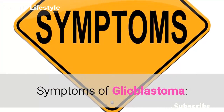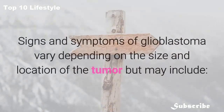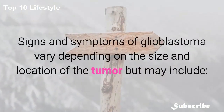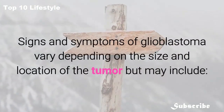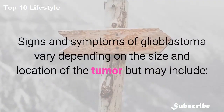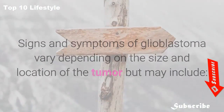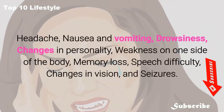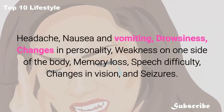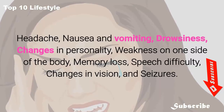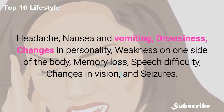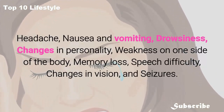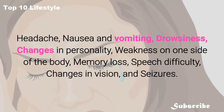Signs and symptoms of glioblastoma vary depending on the size and location of the tumor, but may include headache, nausea and vomiting, drowsiness, changes in personality, weakness on one side of the body, memory loss, speech difficulty, changes in vision, and seizures.